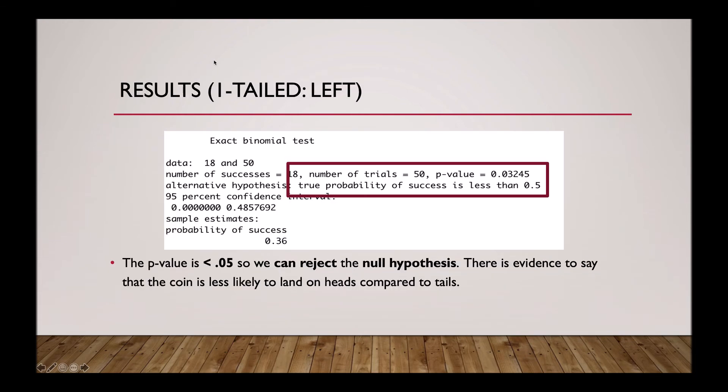And here are the results. As you can see, the p-value is less than 0.05, so we can reject the null hypothesis. There is evidence to say that the coin is less likely to land on heads compared to tails.